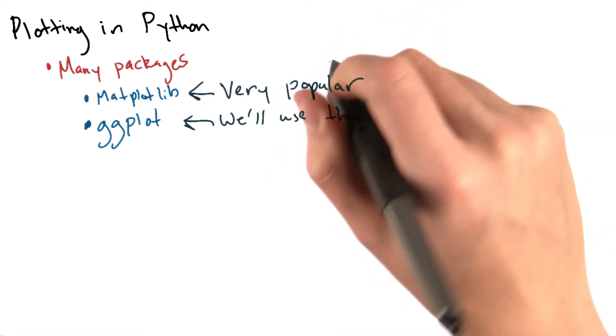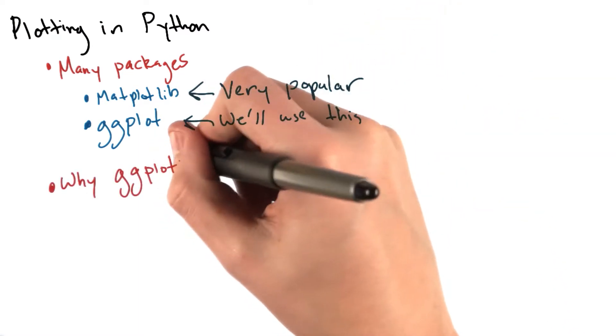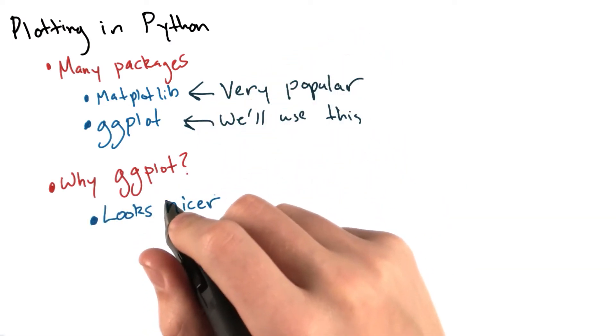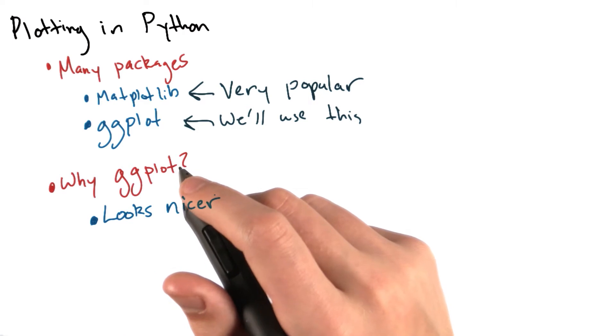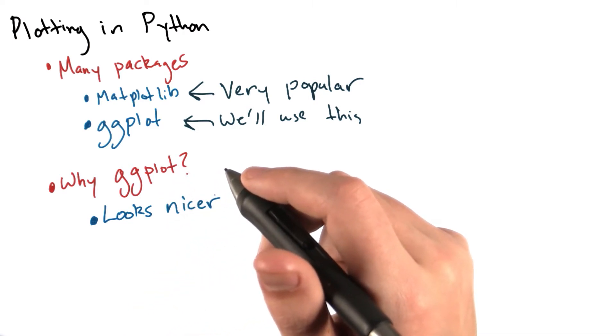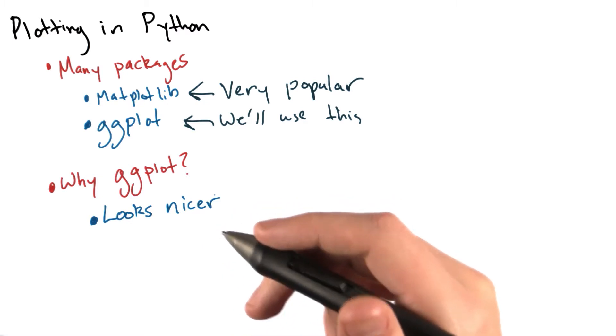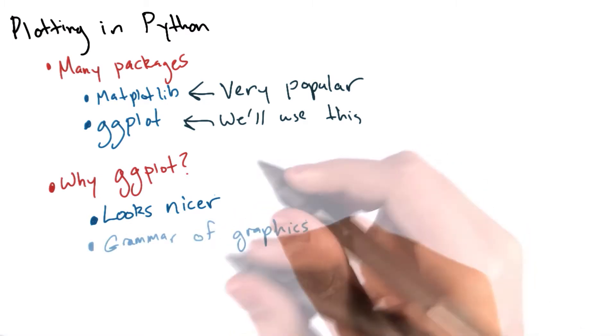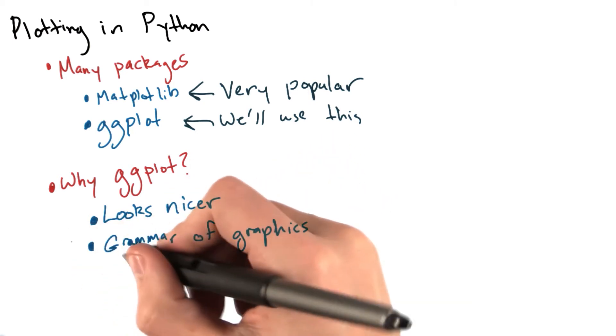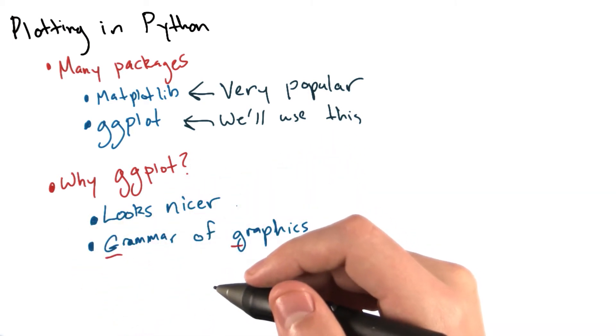Well, I'd like to use this package for a few reasons. First, what it produces is a bit more aesthetically pleasing than matplotlib. Second, it's an implementation of a pretty neat concept called the grammar of graphics, which basically claims that there's a grammar involved in composing graphical components of statistical graphics. The gg in ggplot actually comes from grammar of graphics. It also plays nicely with the pandas data frames we've been using in this course.